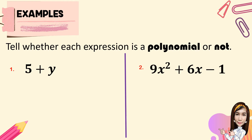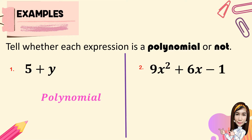For you to understand, let's have the following examples — tell whether each expression is a polynomial or not. First, 5 plus y. This expression is a polynomial. Second, 9x squared plus 6x minus 1. This is also a polynomial.